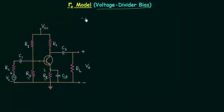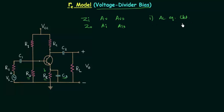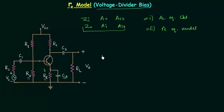Now we will calculate the input impedance, the output impedance, the voltage gain, the current gain, the overall voltage gain, and the overall current gain. To do this we first need the AC equivalent circuit. We already know how to obtain the AC equivalent circuit, and after that we have to replace the transistor by its RE equivalent model. So these are the two things we need to do. I will directly draw the circuit.